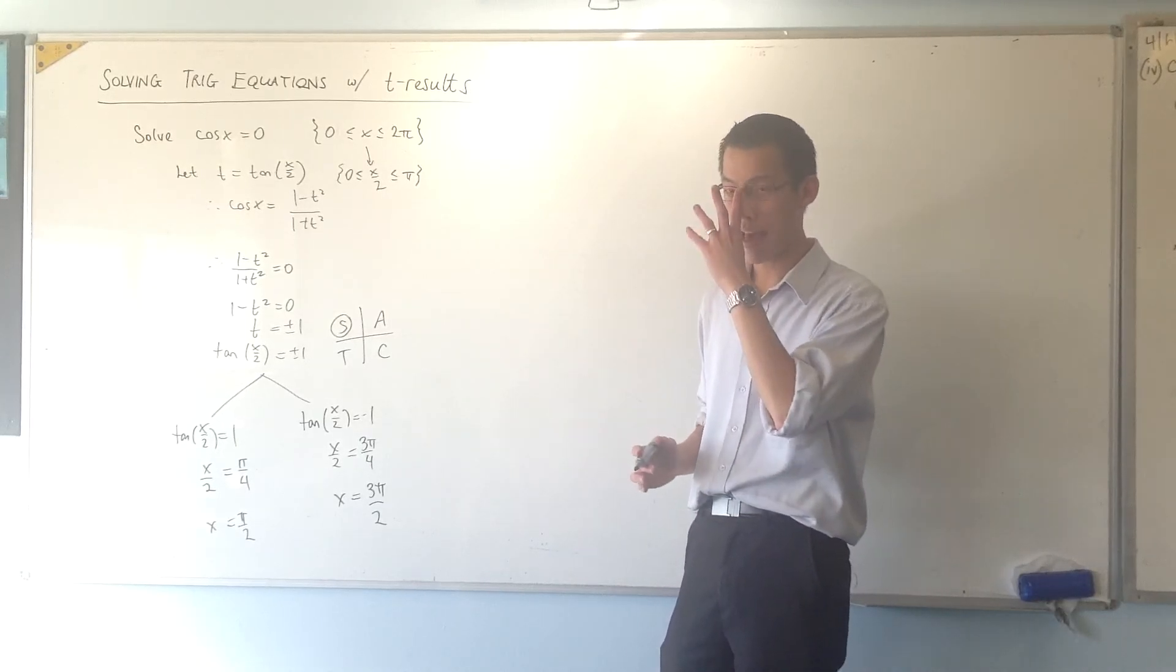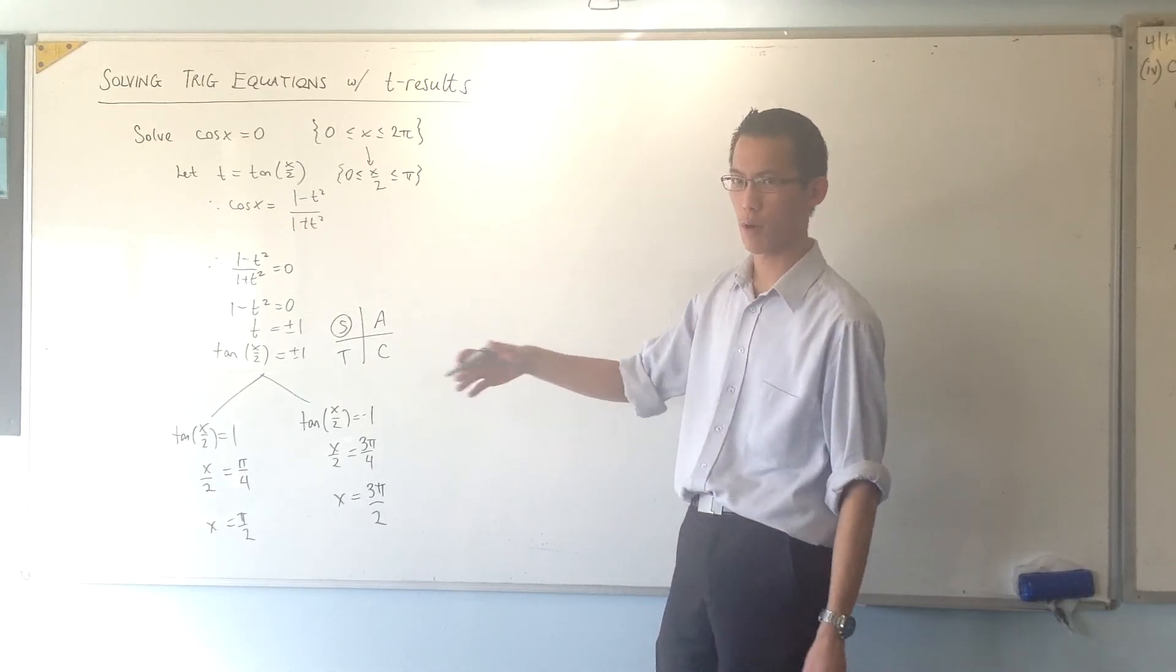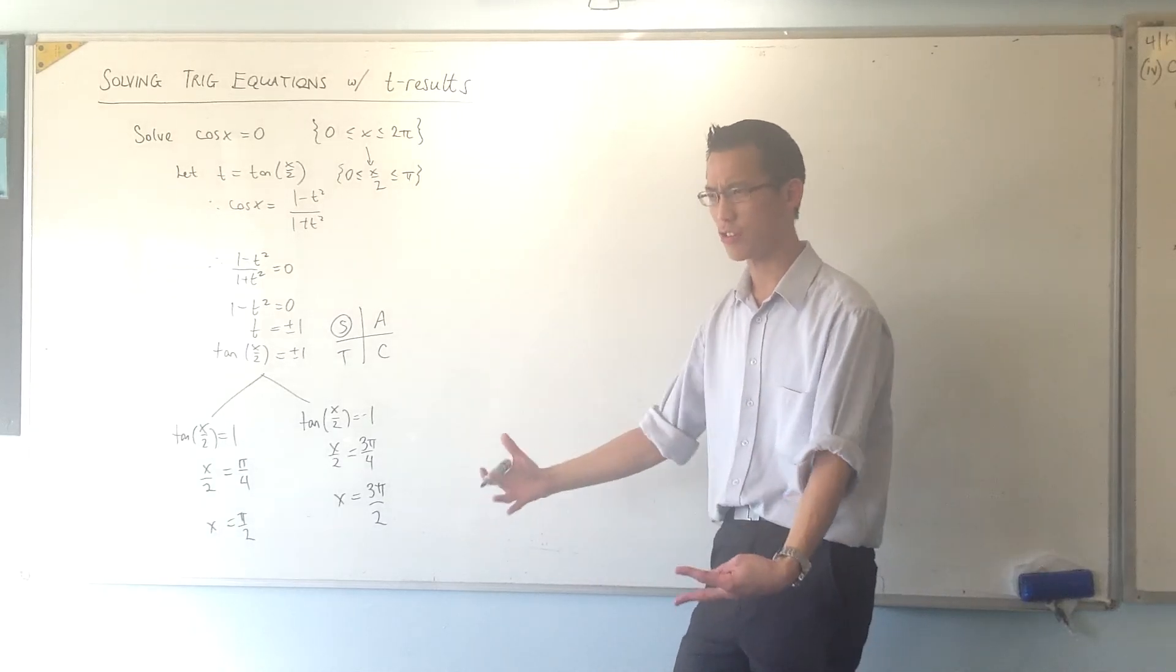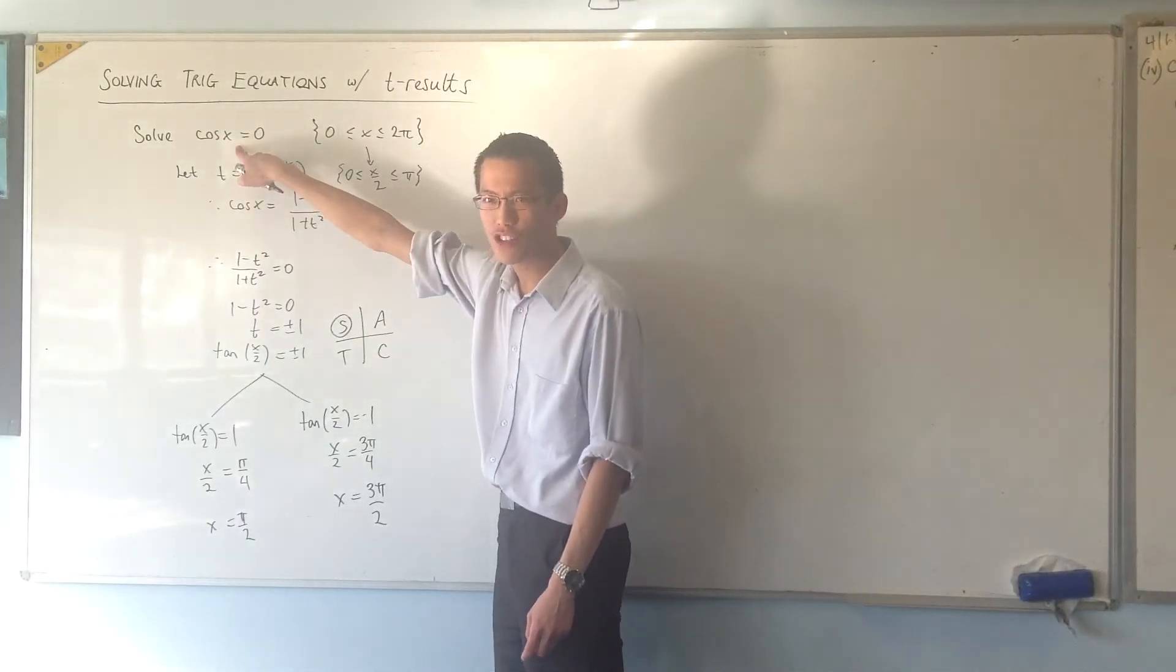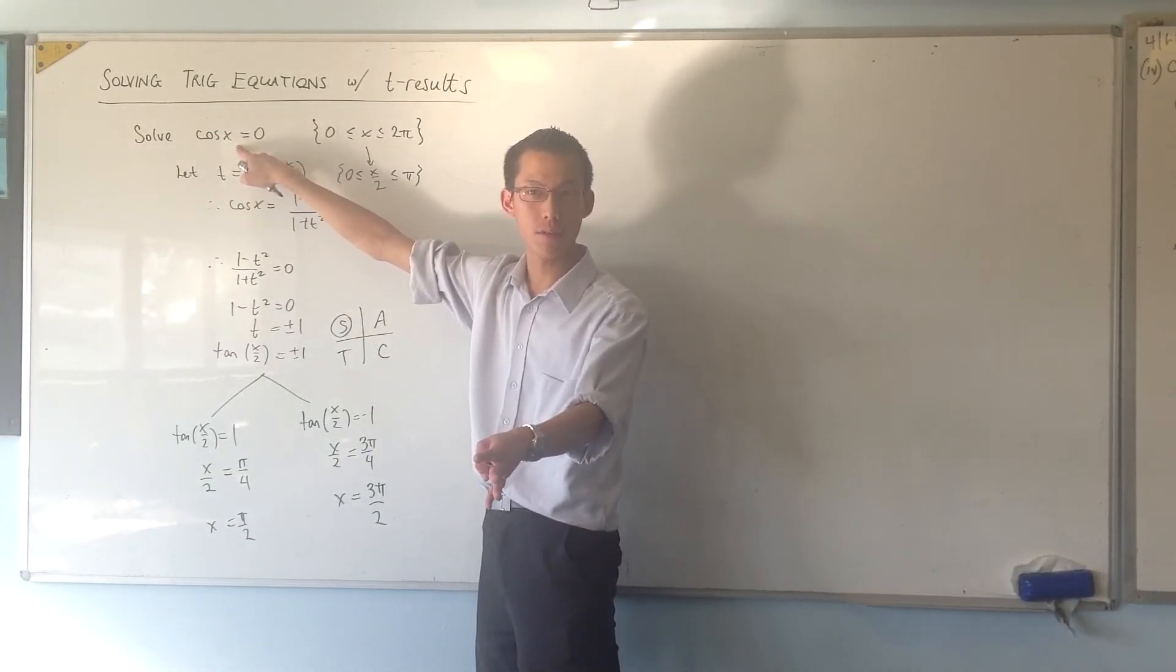Now, let's just confirm that. You don't have to do this, obviously, when you're doing this properly as a question. But just for us, since we're introducing this as an idea. Let's go back to cos x equals 0. How would you solve this without T results?